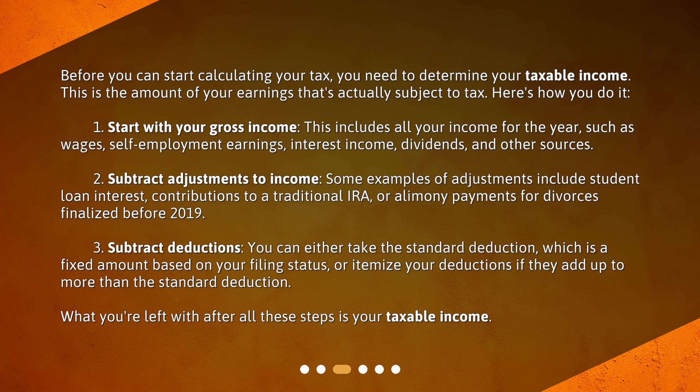Second, subtract adjustments to income. Some examples of adjustments include student loan interest, contributions to a traditional IRA, or alimony payments for divorces finalized before 2019. Third, subtract deductions. You can either take the standard deduction, which is a fixed amount based on your filing status, or itemize your deductions if they add up to more than the standard deduction. What you're left with after all these steps is your taxable income.